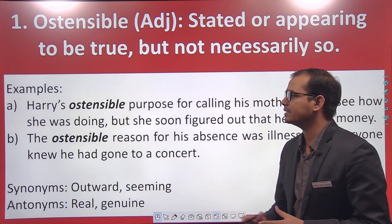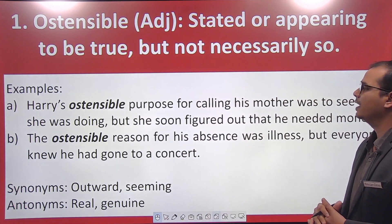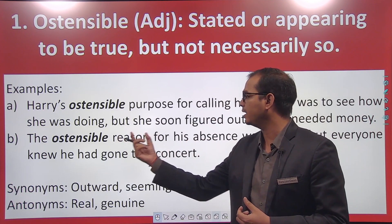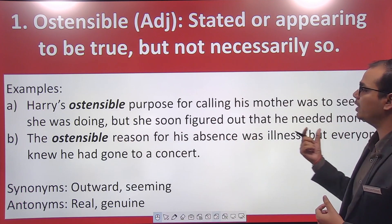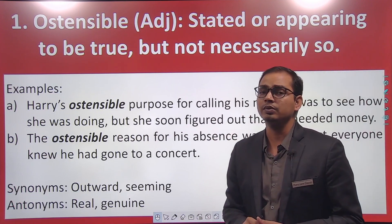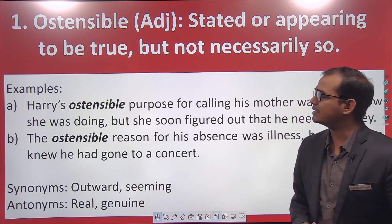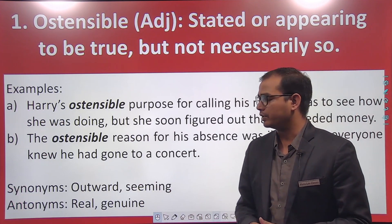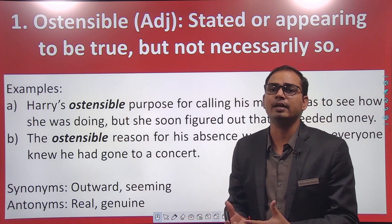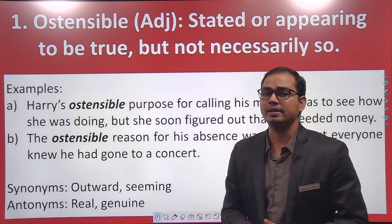Another example: the ostensible reason for his absence was illness — that is the stated reason someone gave for being absent — but everyone knew he had gone to a concert. The synonyms are 'outward' and 'seeming.' The antonyms are 'real' and 'genuine.' To remember it: genuine means real, ostensible means something which is not real — something appearing true but not necessarily so.